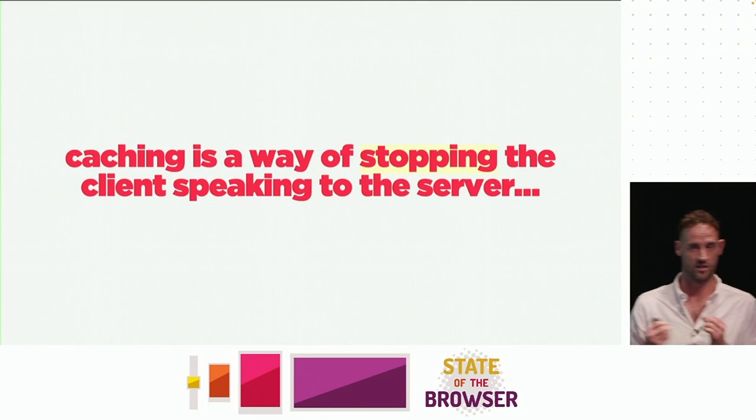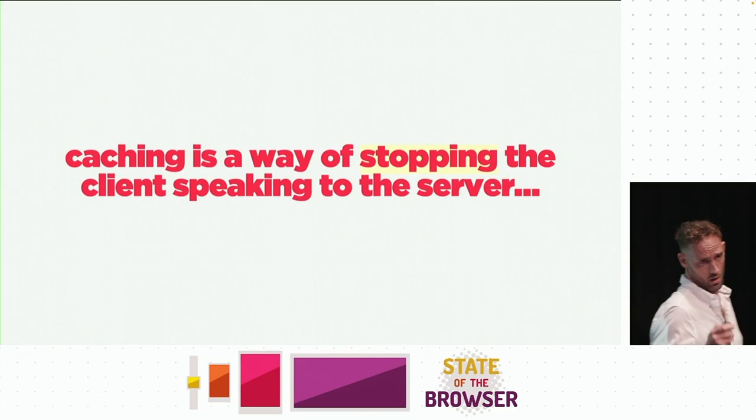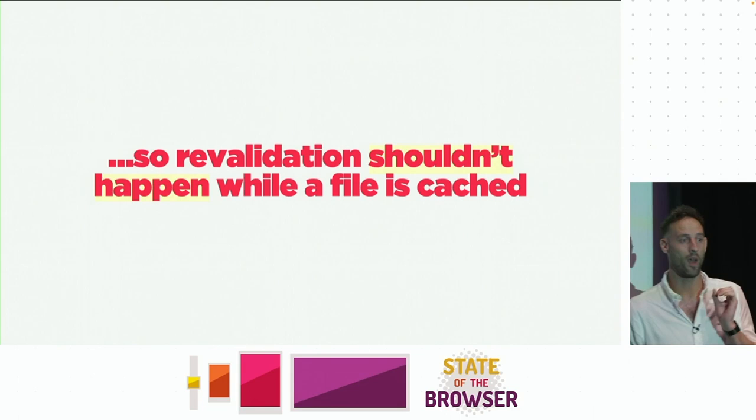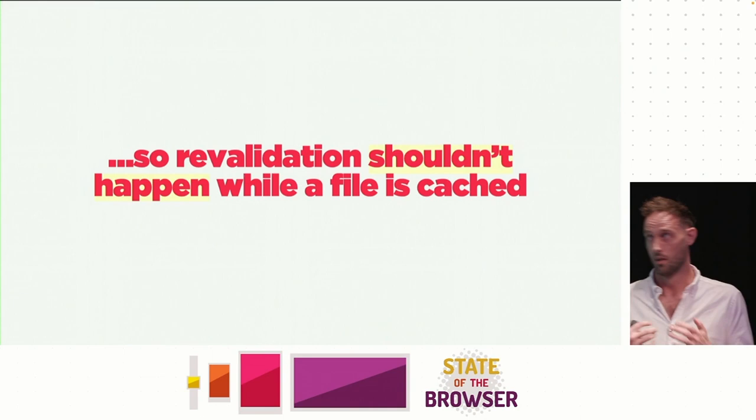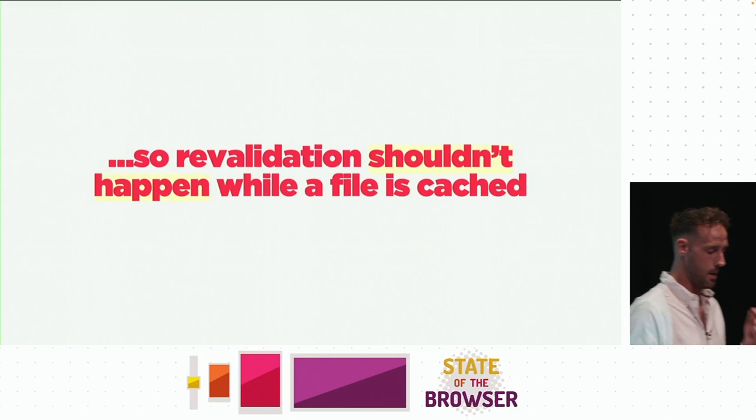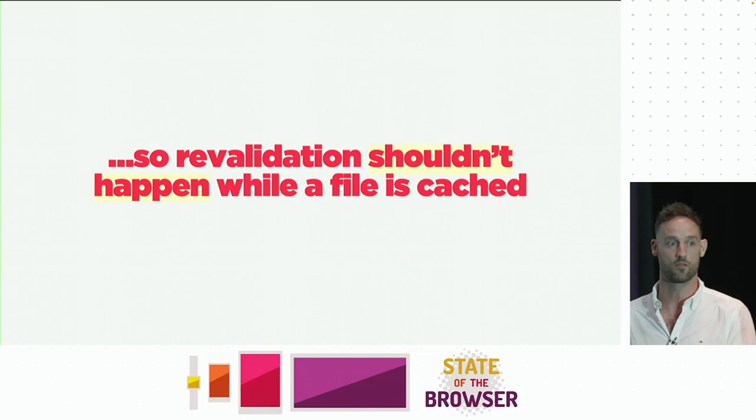Caching, if you think about it, is a way of stopping the client talking to the server. So you would not expect to be able to push updates to a file. It's vitally important you get things set up correctly — don't cache something for a year if you're likely to change it daily. Revalidation should not happen while a file is cached. If this is happening to you, you've actually run into a bug and you've got something potentially conflicting.